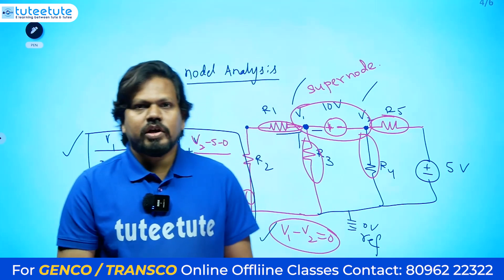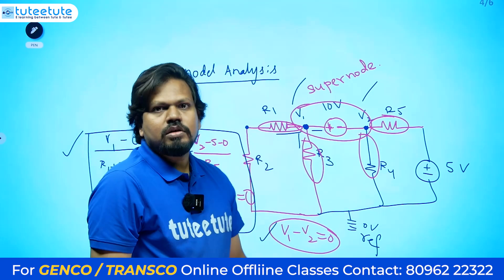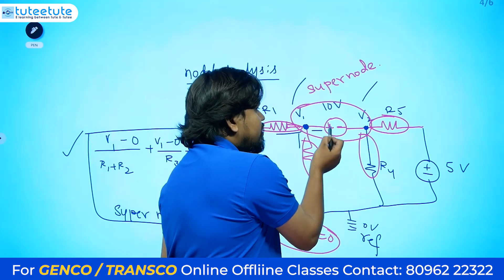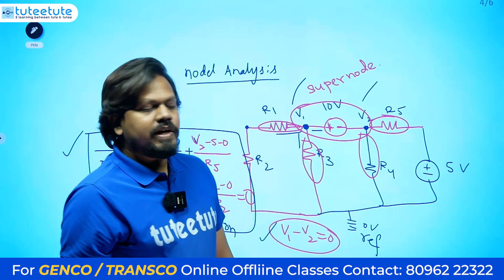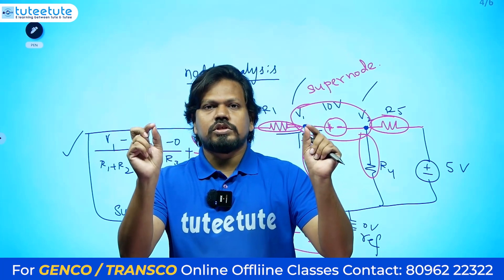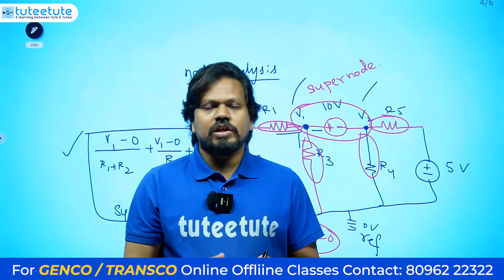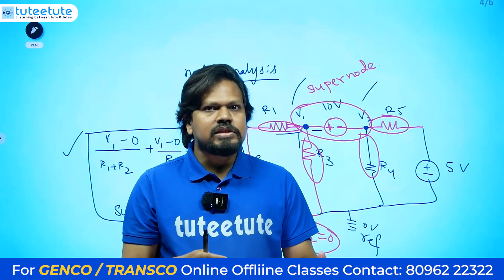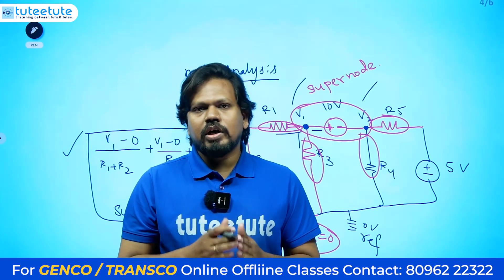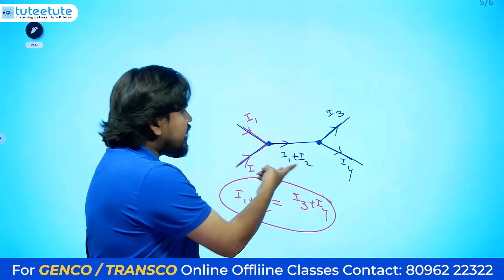Note: if any series resistance is present between the two nodes, that is not a super node. If a current source is in series, the current is directly known so it is not a super node either. A super node forms only when a single voltage source is directly between two principal nodes. The circuit subject is very conceptual — behind every circuit, there is a concept, and 99% of students don't understand why we write the super node equation or how the concept developed.